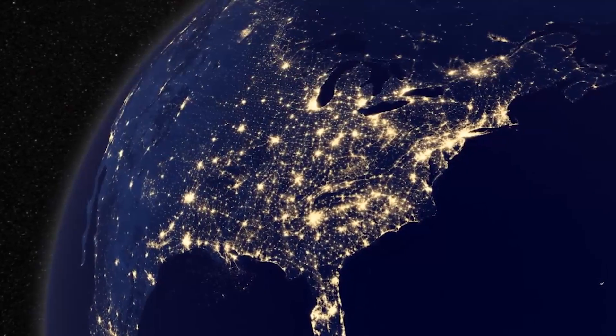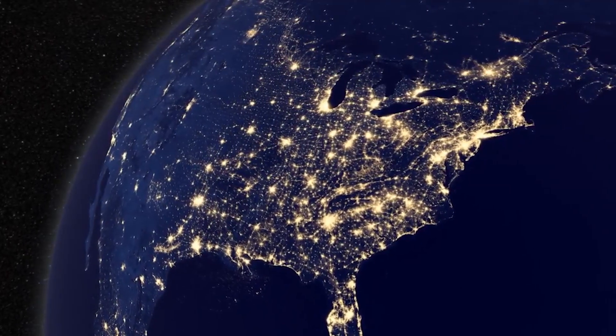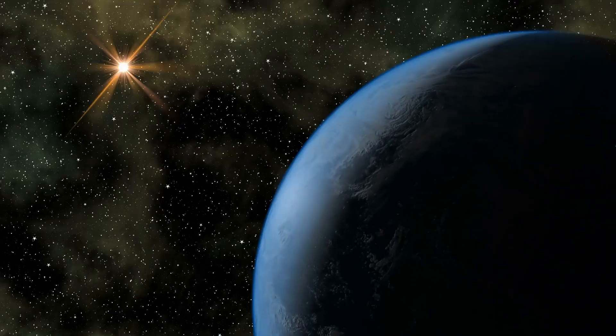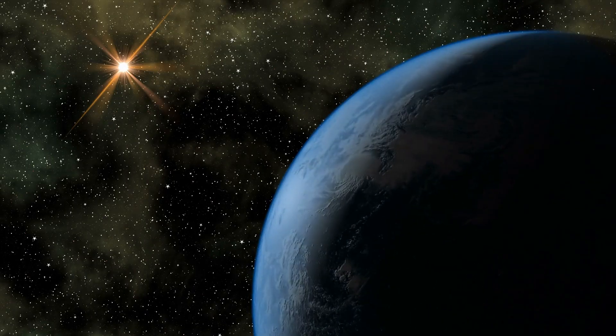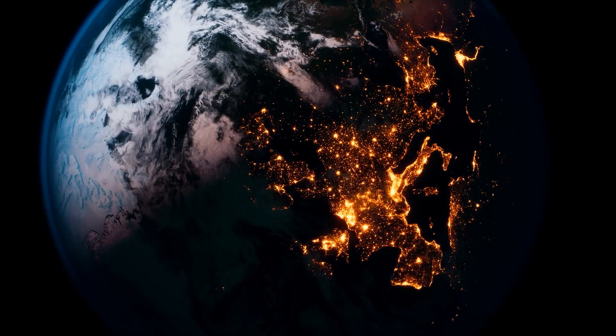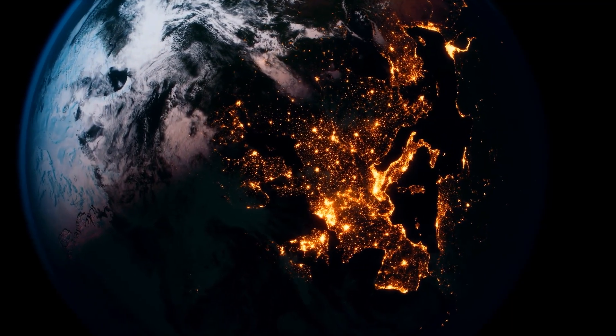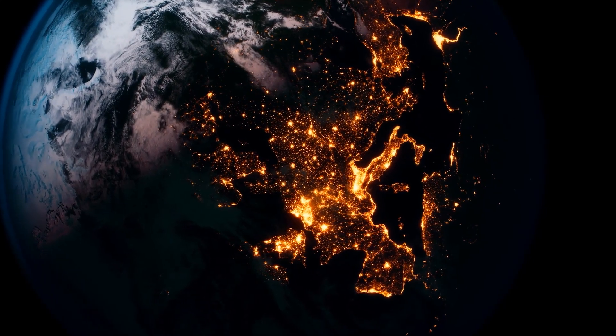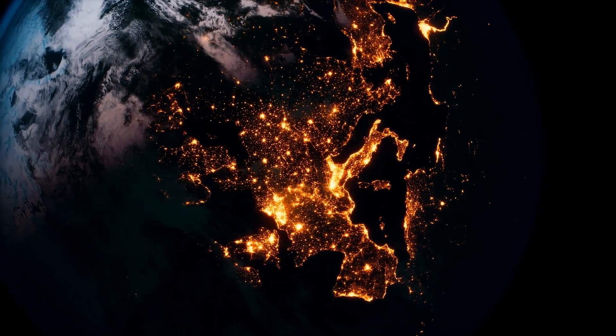100% would imply that the night side of Earth is as brilliant as the day side, which is not the case, while 0% would imply that the night side of Earth is utterly dark. This is because the amount of artificial illumination is just slightly greater than the amount of sunlight reflected off Earth's day side.